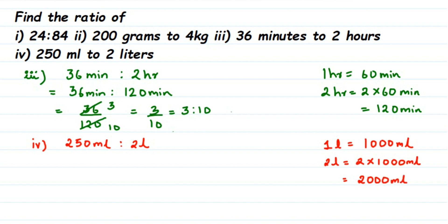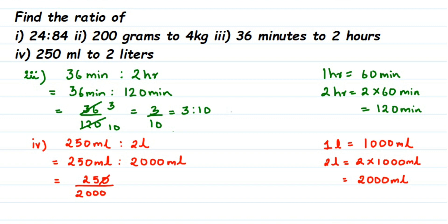So the ratio is 250 ml is to 2000 ml. In fractional form: 250 upon 2000. Cancel the zeros to get 25 upon 200. Cancel by 5: 5×5 = 25 and 5×40 = 200, giving 5 upon 40. Cancel by 5 again: 5×1 = 5 and 5×8 = 40, giving 1 by 8. In ratio form, this is 1 is to 8.